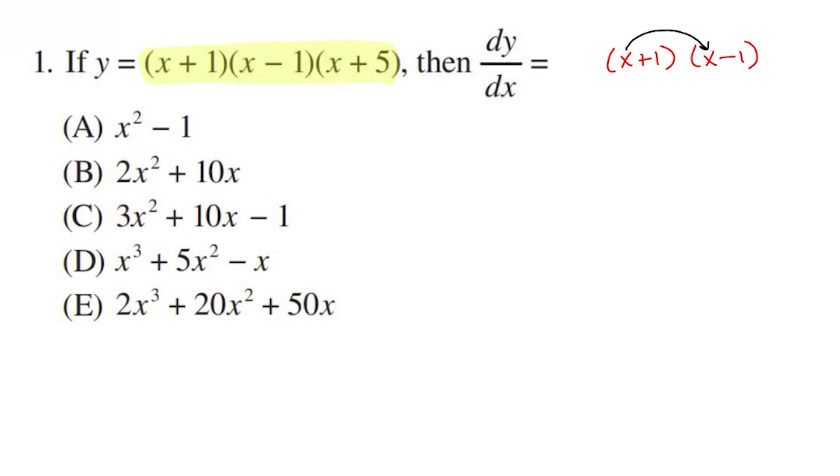x times x is x squared. x times negative 1 is negative x. x times 1 is positive x. And then finally 1 times negative 1 is negative 1. So combining those two middle-like terms gives me x squared minus 1. And this is what I was referring to earlier when I said if you recognize you get an a plus b times a minus b, you're going to get those two middle terms to cancel out every time. And you get a difference of two squares, like x squared minus 1 here.